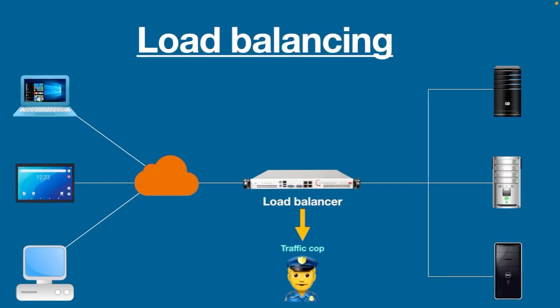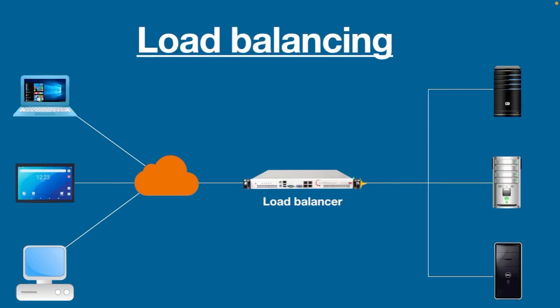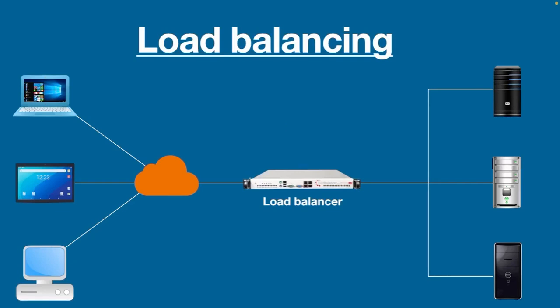It does this in an efficient way that maximizes speed and capacity utilization. When a load balancer receives requests from clients, it routes them to the servers in a server group. Each server receives the request and responds to the client via the load balancer, which then matches the IP addresses of the clients with the selected server and forwards the response.